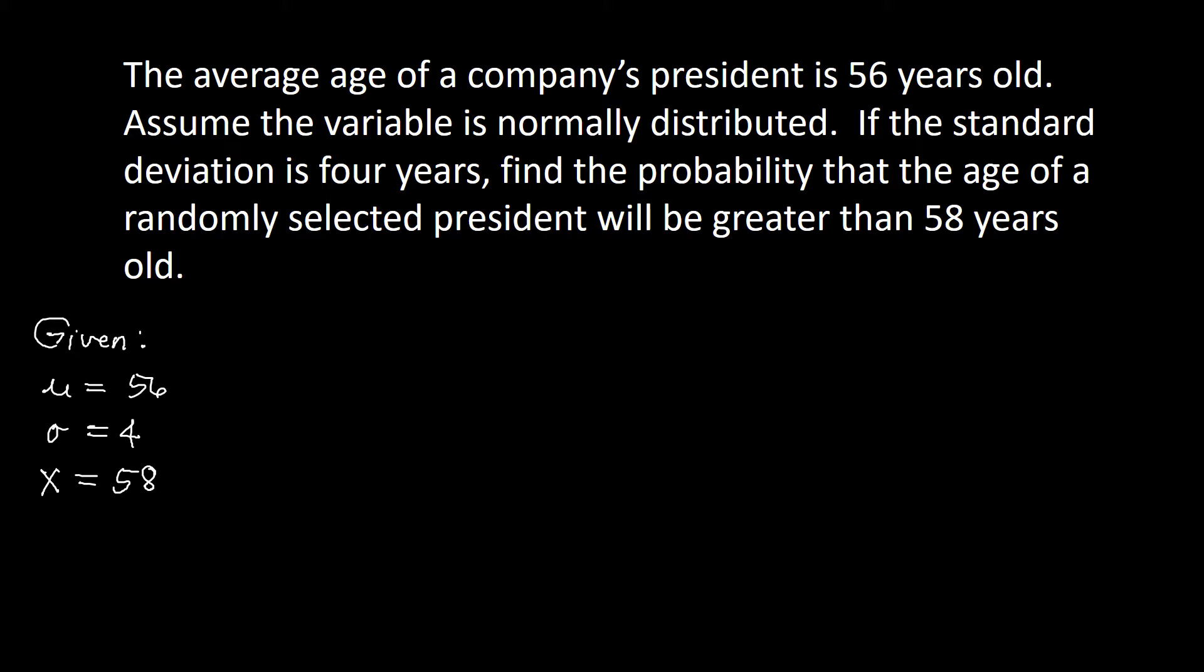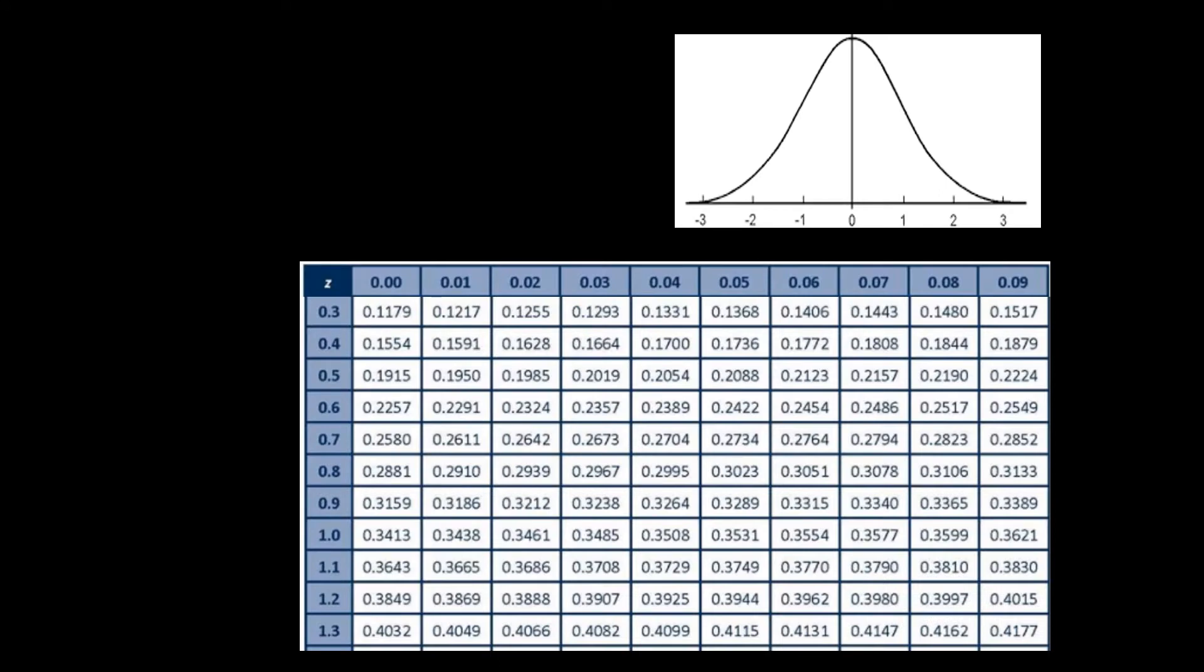We'll be converting your x value to z value by using the formula. The formula is z equals x minus the mean over the standard deviation. So our x is 58 minus our mean, which is 56. We divide that one by 4. We have 58 minus 56. That will be 2 out of 4, and that will be equal to 1 half, or that is 0.5. So our z value here is 0.5.